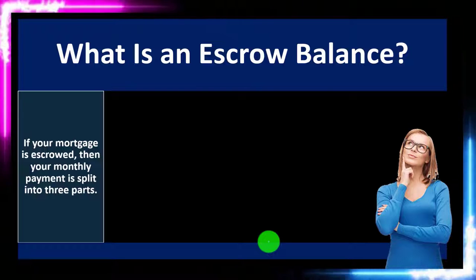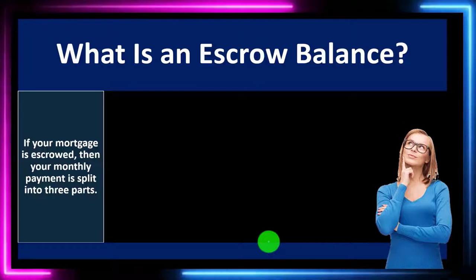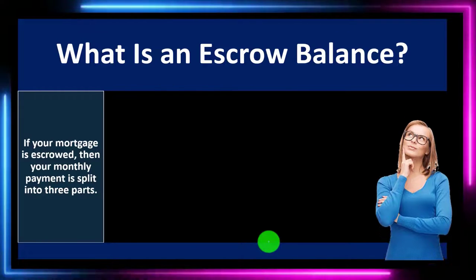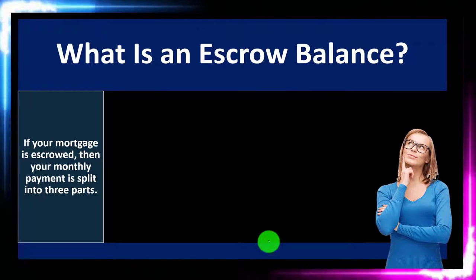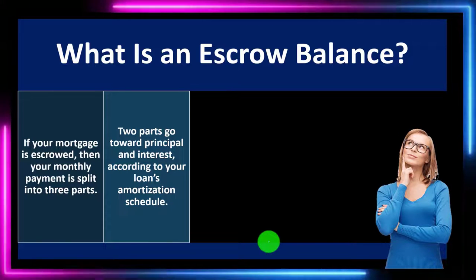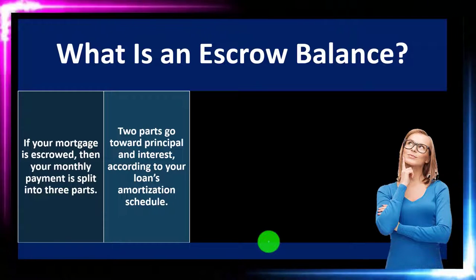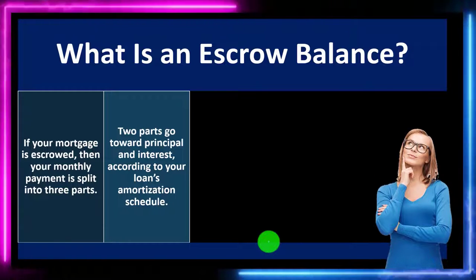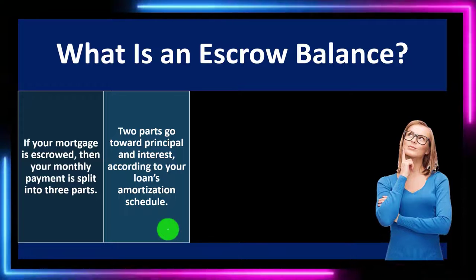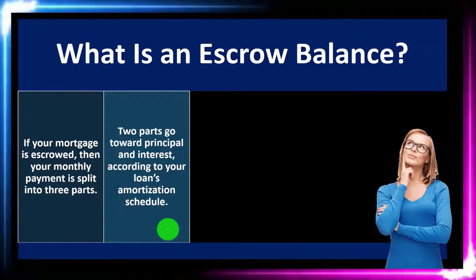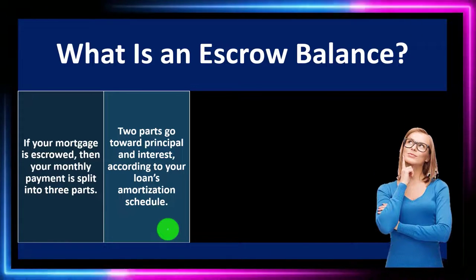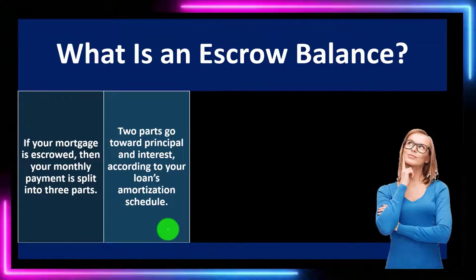What is an escrow balance? If your mortgage is escrowed, your monthly payment is split into three parts. Two parts go toward principal and interest according to your loan's amortization schedule — and we'll start making amortization schedules to get a feel for them in the practice problems.